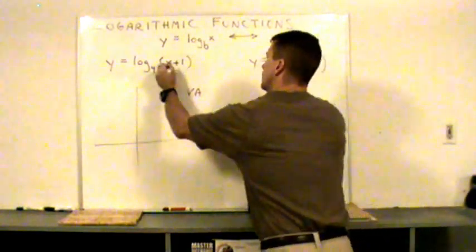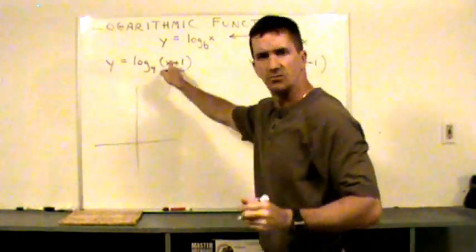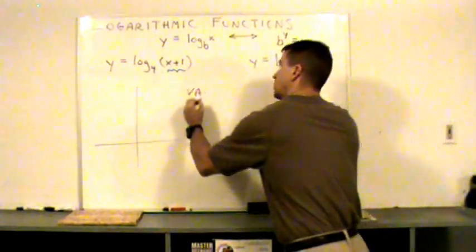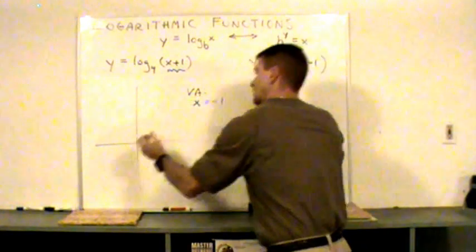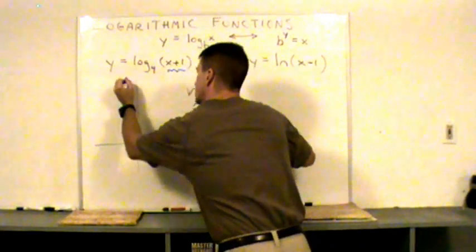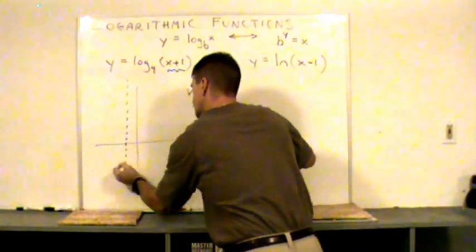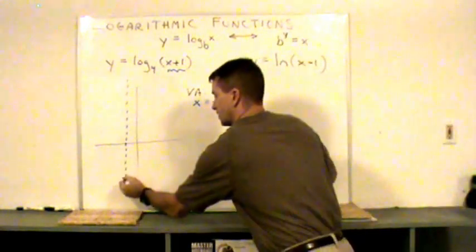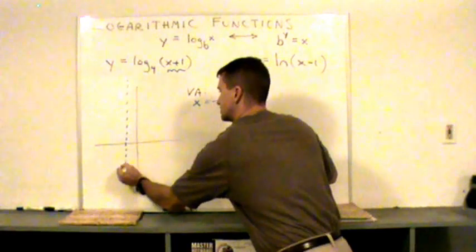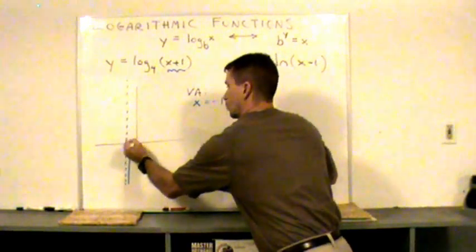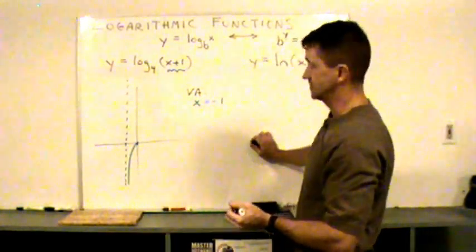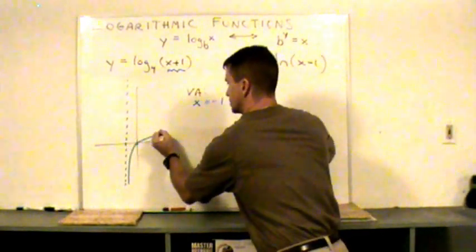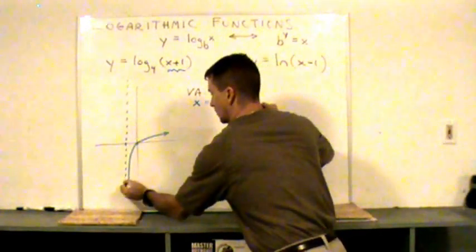What value for x makes x plus one equals zero? What if x equal to negative one? Negative one plus one is zero. So the vertical asymptote is at x equal to negative one. This graph shifted over here. And like before, this graph will come up like this, intersect one tick mark away from the vertical asymptote, and then it'll just slowly, slowly, slowly rise. So I'm just gonna put an arrow here.